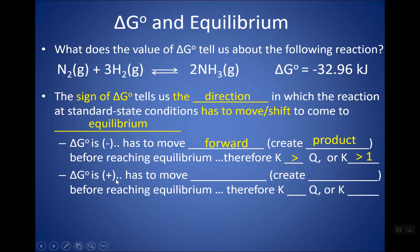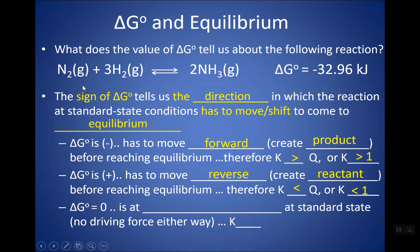In the opposite case, delta G is positive. It's not thermodynamically favorable going forward, but it is in reverse. So you're actually going to be going in the reverse direction until you reach equilibrium — you're going to be creating reactant. By the time you get to equilibrium, you're going to have a lot more reactant than product. So your K is going to be a small number — much larger denominator than numerator — K is going to be less than 1. And if delta G is zero, that means there's no driving force going forward or reverse: you're at equilibrium and your K is equal to one at standard state conditions.